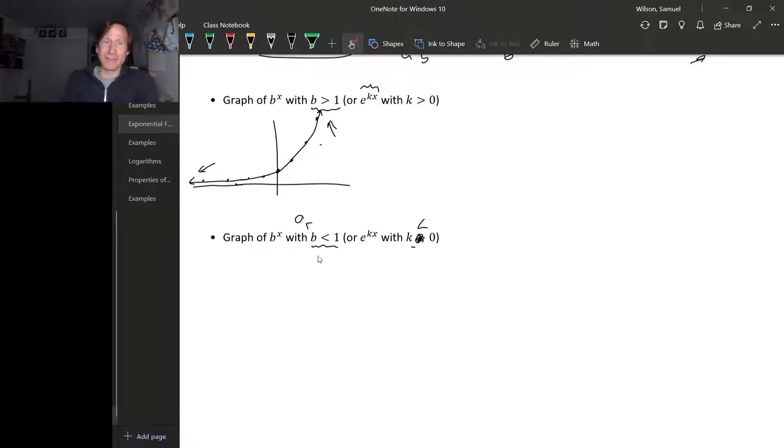What about the second flavor of exponential functions, where your base is less than 1? Wherever you start on the y-axis, to move one unit to the right, you multiply your y-coordinate by b, but b is less than 1, so multiplying by a value less than 1 makes it smaller. Then to move to the right again, you multiply by b again, making it even smaller.